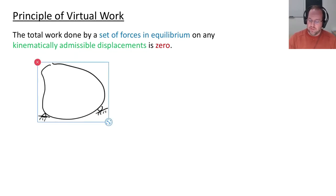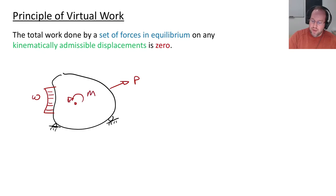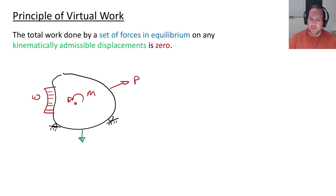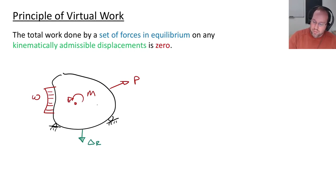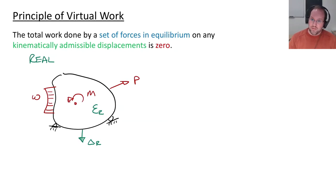To illustrate this, let's first consider a structure. Here is our potato structure, loaded with a concentrated force P, a distributed load W, and a concentrated moment M. I would like to calculate the displacement at a point — let's call that δᵣ — but I don't know what that is. However, I can calculate the strains throughout the entire structure, εᵣ. We'll call this the real system, where the subscript r stands for real, providing a kinematically admissible displacement field — meaning it satisfies boundary conditions and is a continuous function consistent with the laws of physics.